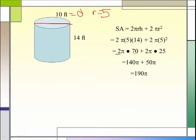Now what I did here: 2 times 70 is 140, π stays on the end. 2 times 25 is 50, π stays on the end. Now I add the like terms. 140π and 50π is 190π.